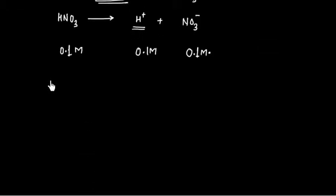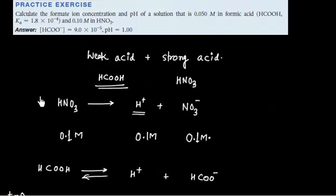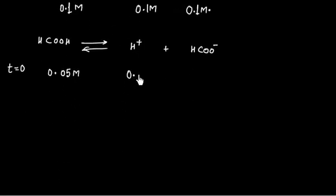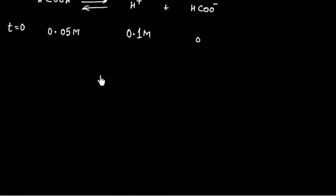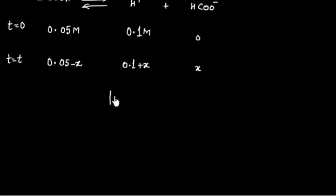The dissociation of this weak acid will take place in the presence of this H+ from the strong acid. HCOOH gives H+ plus HCOO−. At T = 0, concentration of formic acid is 0.05 M, concentration of H+ is 0.1 M (from HNO3), and formate ion is initially zero. At equilibrium, some formic acid dissociates, forming some H+ and some formate.